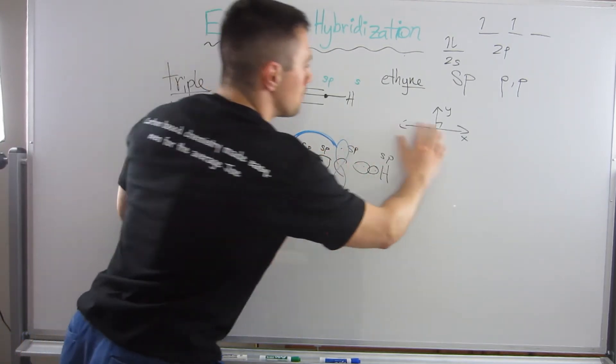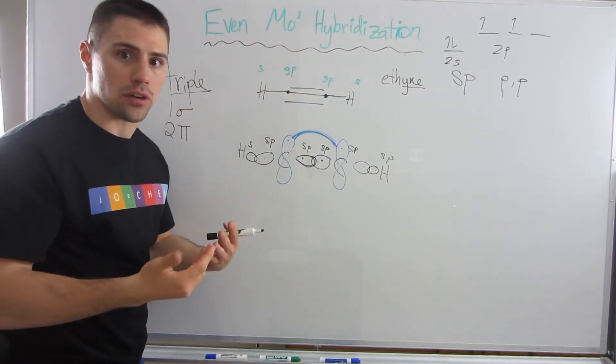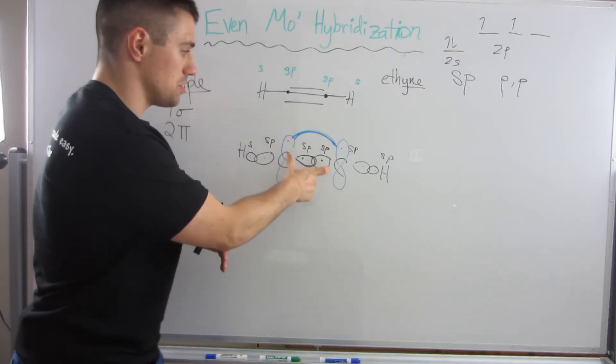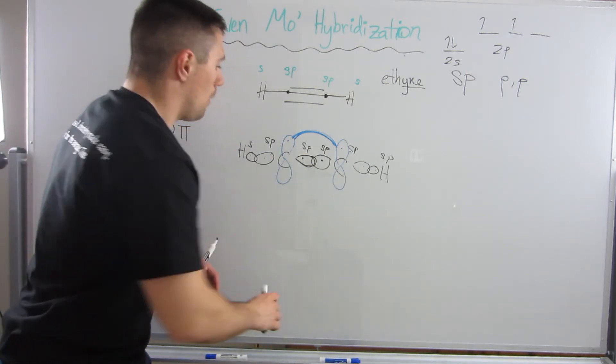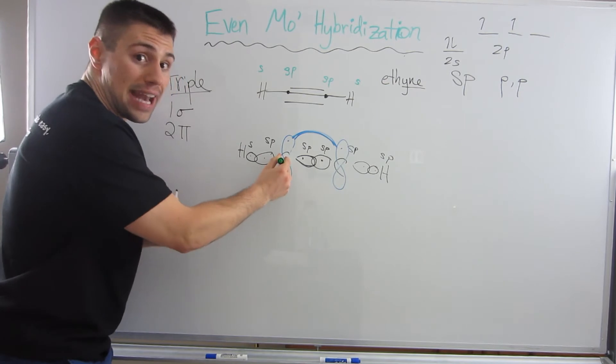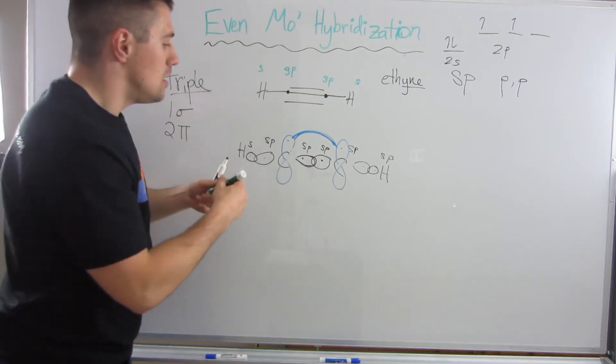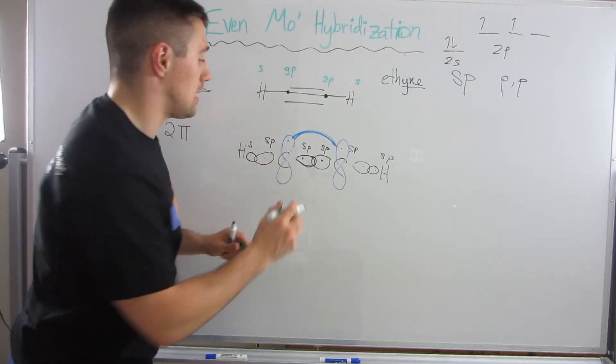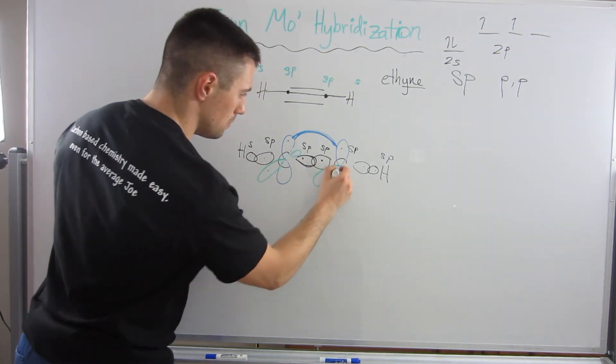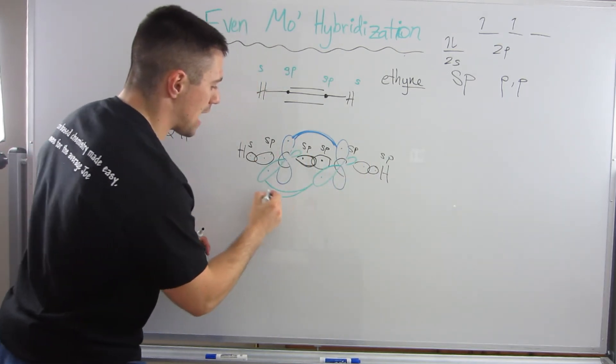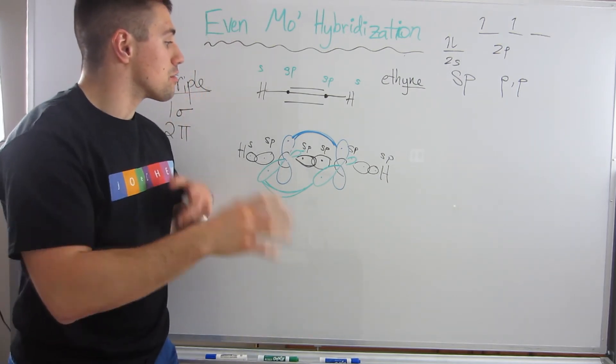We've drawn one set of p orbitals. Where's the other? How can we put another set of p orbitals that are parallel to themselves but perpendicular to everything else going on in this molecule? We have to draw them in and out of the board, because there's a 90-degree angle between here and here. I'm not great at drawing in 3D, but—sound effects necessary—there's an interaction like that.